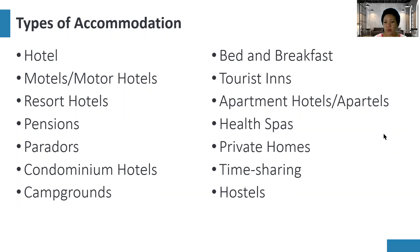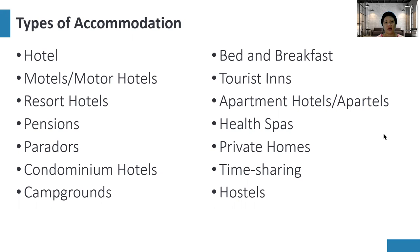Next is private homes. Private homes can also be considered an accommodation. In our generation, it is a booming type of accommodation where some private homeowners allow guests — such as friends or online friends — to stay, even accommodating international visitors.